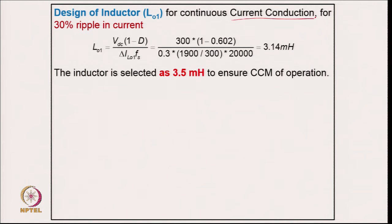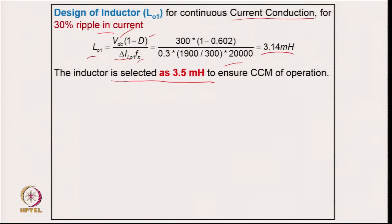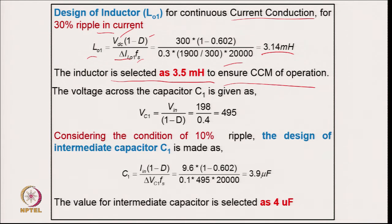The output inductor is designed for CCM with 30 percent ripple current. During the off-period (1 − D), the output voltage drives the inductor; this gives a calculated value of 3.14 mH. To ensure continuous conduction mode over a wide operating range of input voltage and load variation, the output inductor is selected as 3.5 mH.